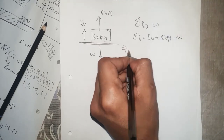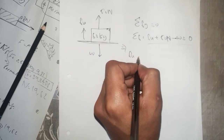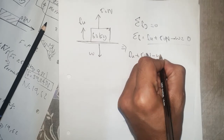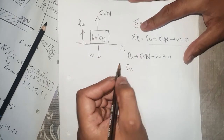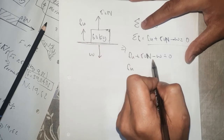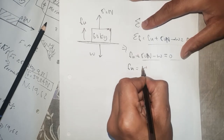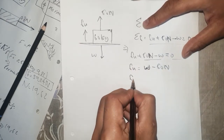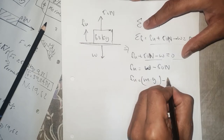The weight force is on the downside, meaning it's negative. So: normal force plus 50 Newtons minus weight force equals zero. We isolate the normal force: Fn equals weight force minus 50 Newtons. The weight force is M times G, so Fn equals M times G minus 50 Newtons. Our mass is 60 kilograms times 9.8, minus 50 Newtons.